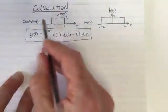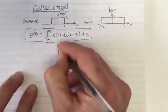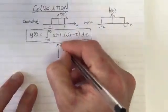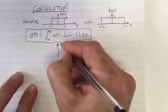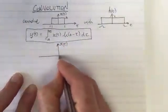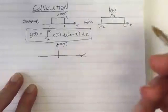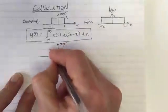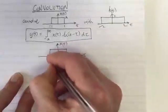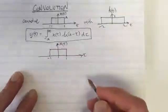We've got our function x(t) at the top, and I'll plot it here as x(τ). It's x(t) but plotted with respect to τ — we know that's no different. We're plotting it with respect to τ and it's the same function; we've just replaced t with τ.